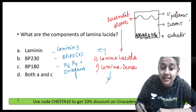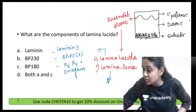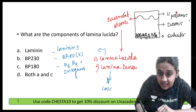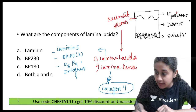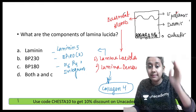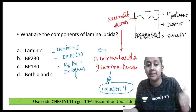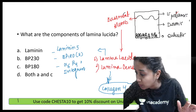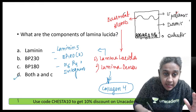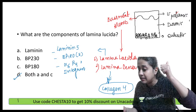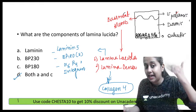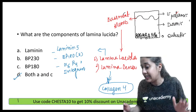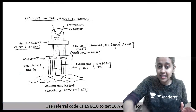The component of Lamina Densa is Collagen 4. So: Lamina Densa is made up of Collagen 4, while Lamina Lucida is made up of Laminin 5, BP180, and Alpha 6 Beta 4 Integrin. The answer to the first question is both A and C.